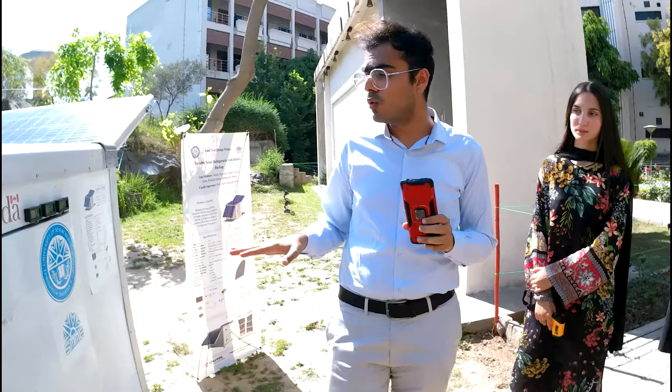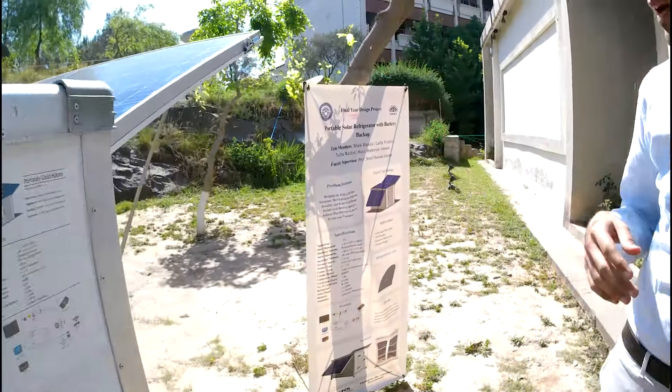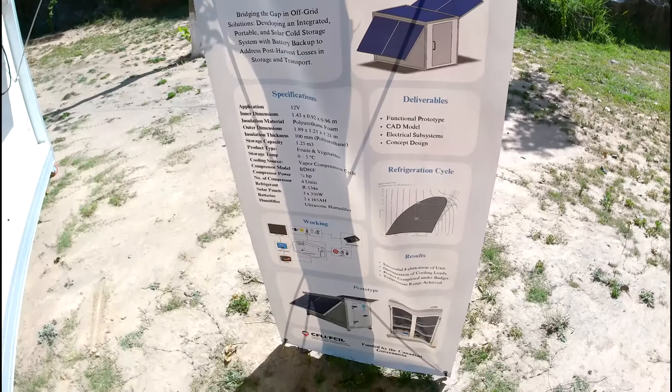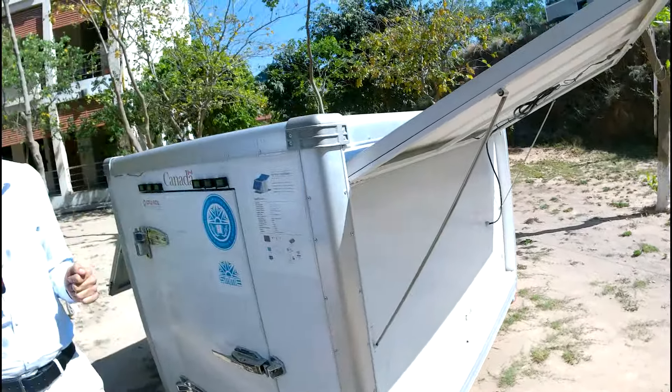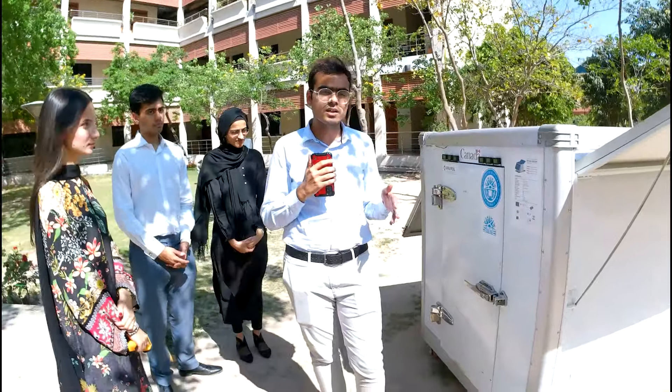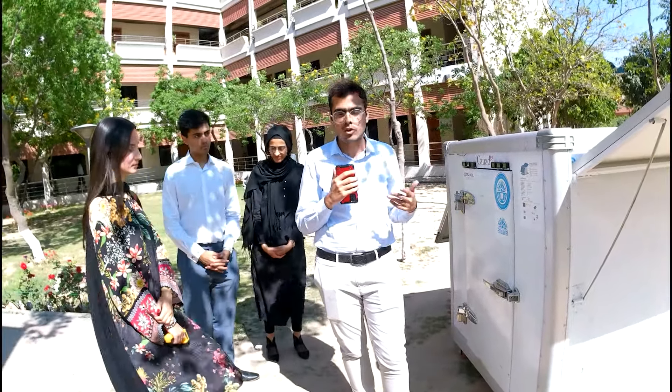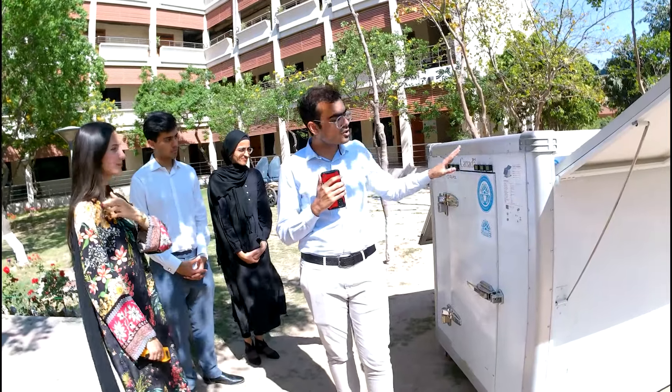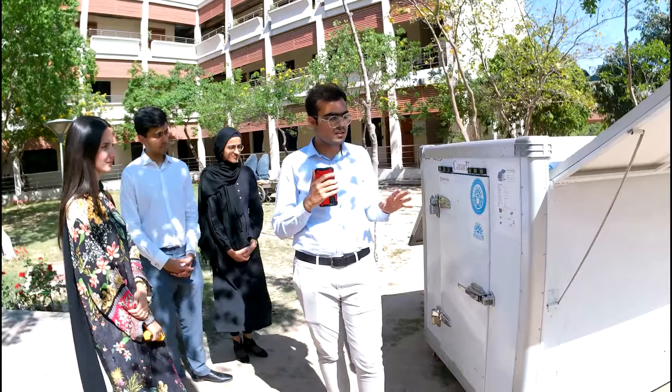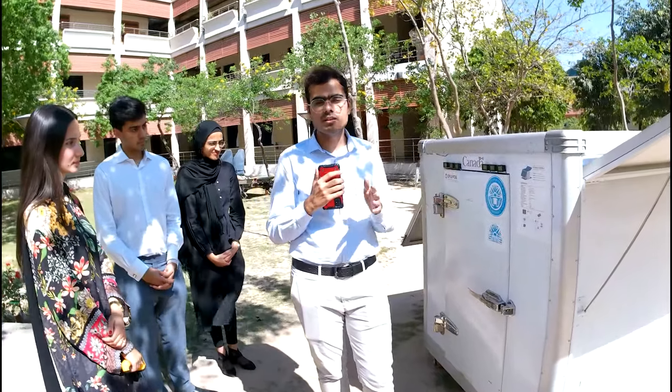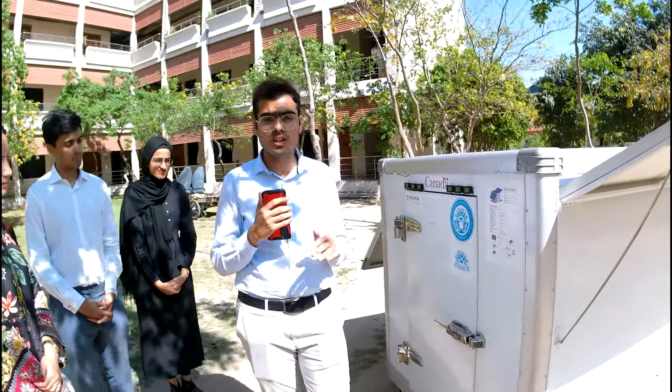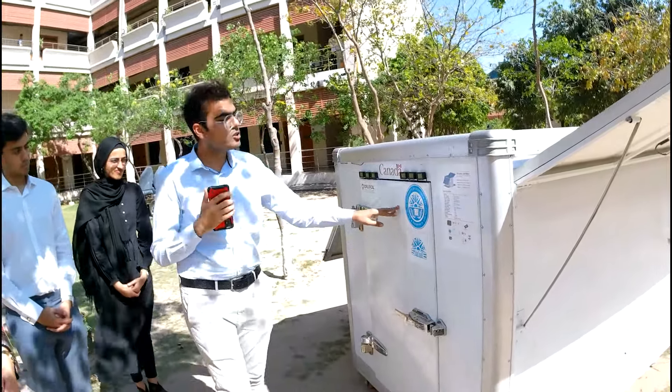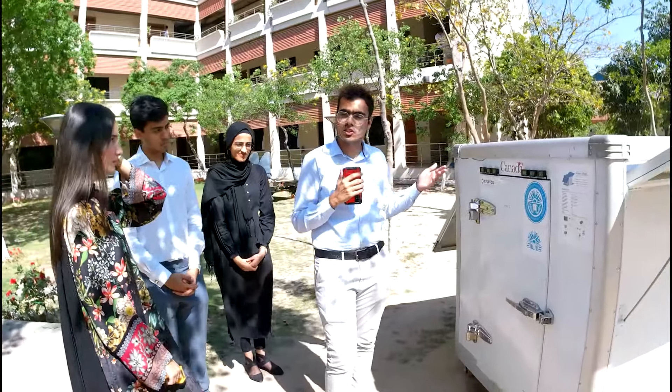Assalamu alaykum. This is our project. It's called Portable Cold Room with Solar and Battery Backup. It's the application for the fruits and vegetables transportation. When the fruits and vegetables are harvested in farms, they are in the cold storage. And when they come to the trucks and wagons to the city, they spoil 30 to 40% of them. We have made a unit to reduce the spoilage. It's the size of Suzuki Carry Dabba. When we put it on the carry dabba and put it in the farm, we will put it in the cold, then it will be completely fresh. It will have extended shelf life.